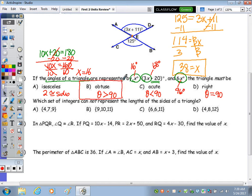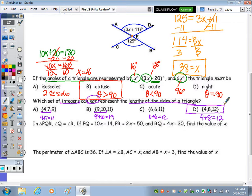Because of this 96 degree angle, it is an obtuse triangle. Number four: which set of integers cannot represent the sides of a triangle? Remember when you add any two sides, it must be greater than the third side. 4 plus 7 is 11, bigger than 9. 9 plus 10 is 19, bigger than 11. 6 plus 6 is 12, bigger than 11. But 4 plus 8 equals 12, which is not bigger than 12. So it's D.